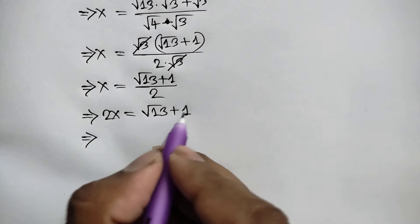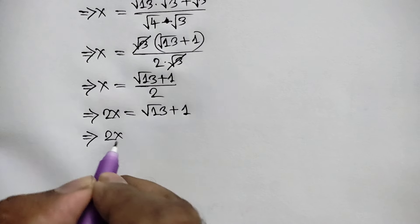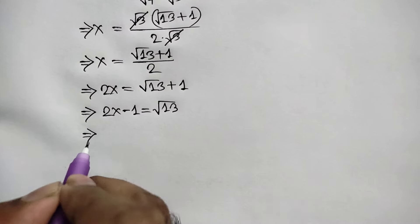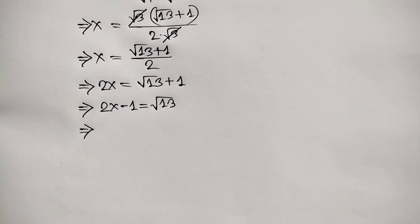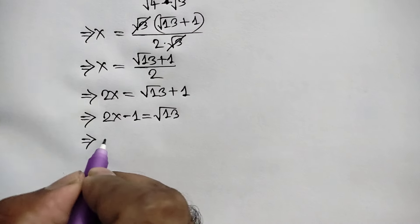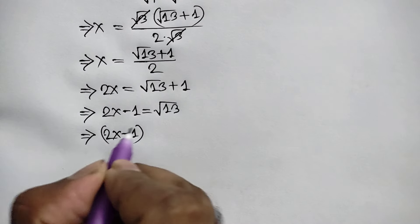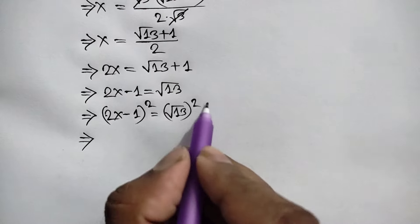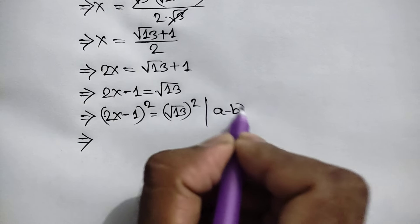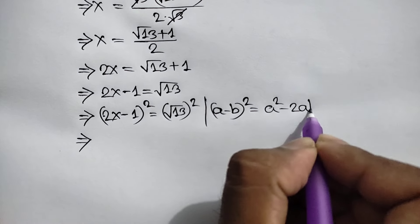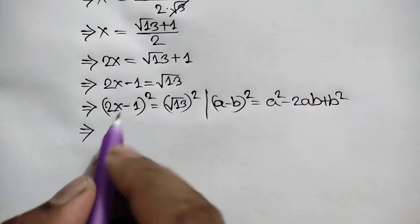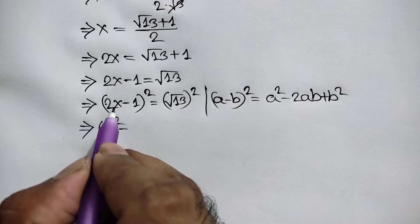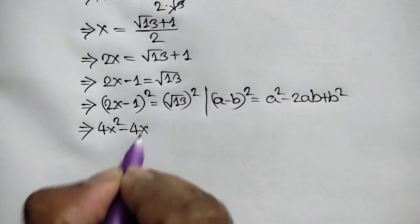Taking the positive 1 to the left side, we get 2x minus 1 equals square root of 13. Now squaring both sides, we apply the identity (a minus b)² equals a² minus 2ab plus b². So we get (2x)² minus 2 times 2x times 1 plus 1², which gives 4x² minus 4x plus 1, equal to 13.